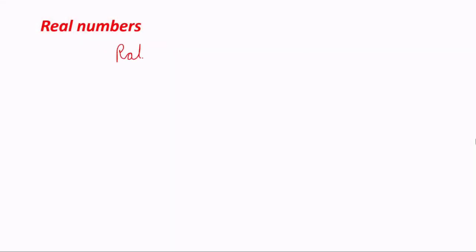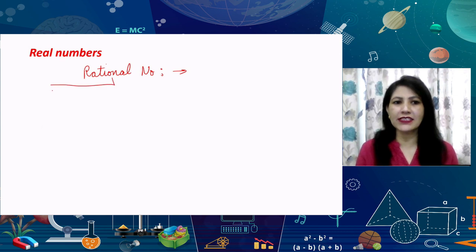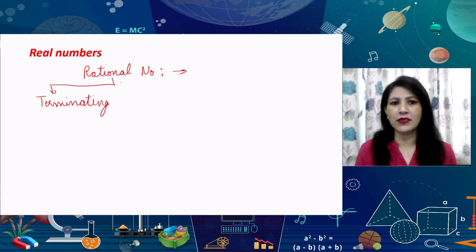We have a question that came in from the first part, given by Vaishnavi Gupta. She has a confusion about real numbers — specifically, she has asked about rational numbers and when a rational number is terminating.